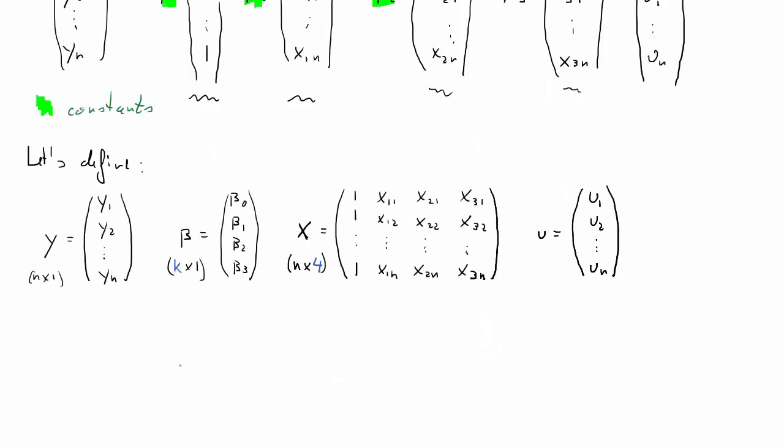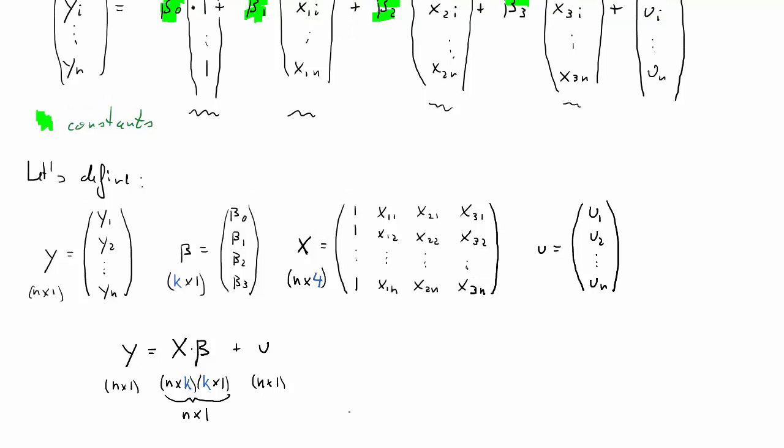And of course we have a term u, which just collects all our error terms. Now once we've defined these terms, we can now basically represent the regression model in this form: y equals x times beta plus u. And what are the dimensions of these? y is n by 1, x is n by k, beta is k by 1, and u is n by 1. Now using matrix multiplication, we know that x times beta will have dimensions n by 1. So all these terms are n by 1. So addition is possible. And that equation, at least dimension-wise, is okay.